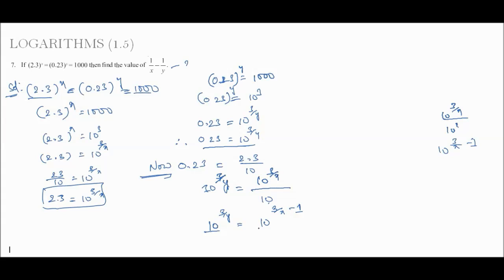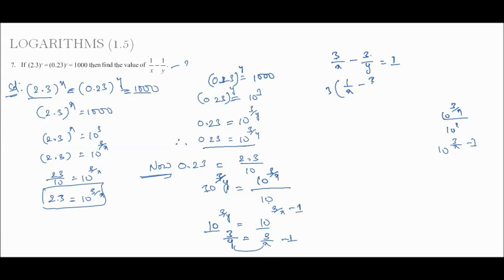Since bases are equal, powers are equal: 3/y equals 3/x minus 1. Rearranging: 3/x minus 3/y equals 1, so 3 into (1/x minus 1/y) equals 1, giving 1/x minus 1/y equals 1/3. That is the answer. The 7th problem is done.